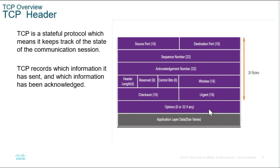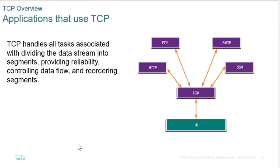After the options is the actual data coming from the application layer. To summarize, TCP handles all tasks associated with dividing the data stream into segments, providing reliability, controlling data flow, and also reordering segments. Applications suitable for TCP include HTTP, HTTPS, FTP, SMTP, and SSH, among others. The key is understanding the characteristics of the application layer protocol that make it suitable to use TCP.